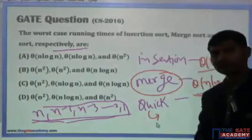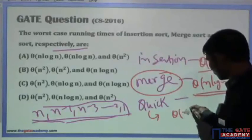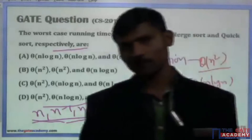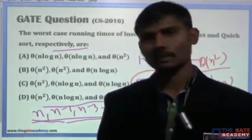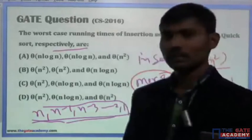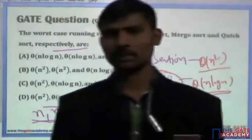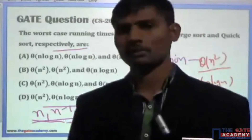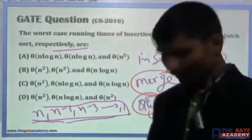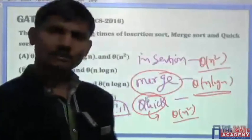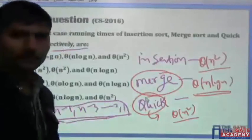For quick sort, the worst-case time complexity is θ(n²). This occurs when the list is already in ascending or descending order, or when the pivot chosen is always the first element, last element, or similarly extreme element. With such inputs or pivot choices, the quick sort algorithm behaves as θ(n²).